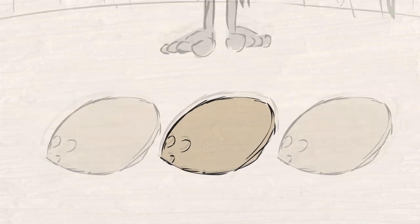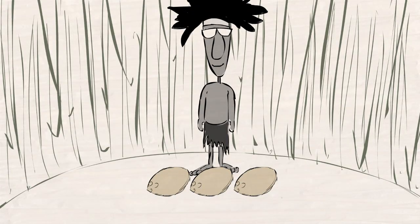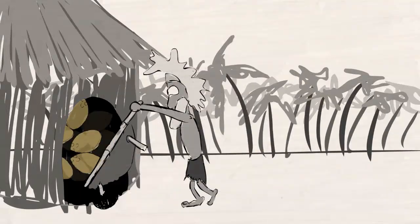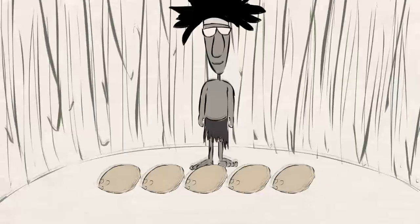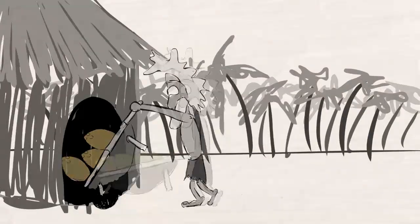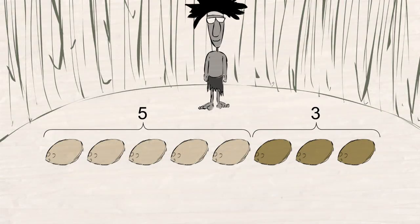For instance, if you have three coconuts and then your neighbor gives you five more, you will have eight coconuts. Interestingly, if you start out with five coconuts and then your neighbor gives you three more, you will also have eight coconuts.